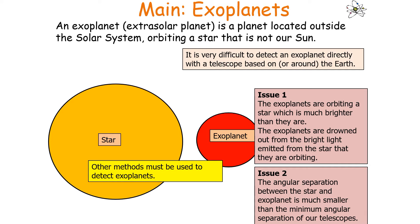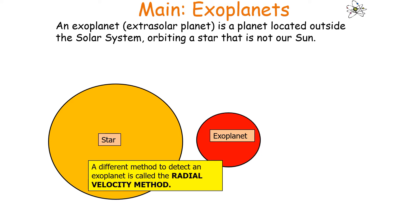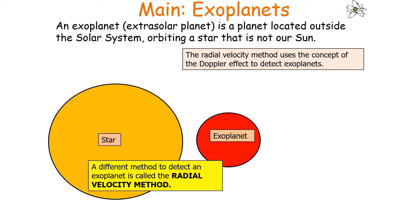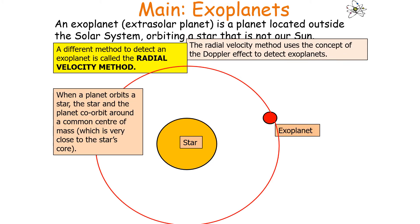A different method to directly imaging exoplanets is called the radial velocity method. The radial velocity method uses the concept of the Doppler effect to detect exoplanets. When a planet orbits a star, the star and the exoplanet co-orbit around a common centre of mass, which is actually very close to the star's core.